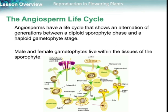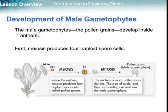The angiosperm life cycle: angiosperms have a life cycle that shows an alternation of generations between a diploid sporophyte phase and a haploid gametophyte stage. Male and female gametophytes live within the tissues of the sporophyte, as you can see in this cycle.